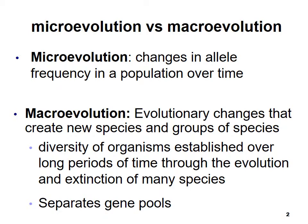We talked about microevolution in the previous chapter when we discussed the Hardy-Weinberg conditions. Microevolution is a change in allele frequency in a population over time. Macroevolution takes those things that lead to microevolution and amplifies it — these are the evolutionary changes that create new species or groups of species. Really, macroevolution is the type of evolution that separates gene pools.